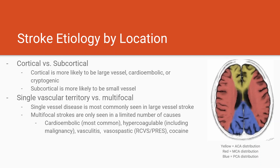Before moving on to hemorrhagic stroke, I want to reemphasize using the location of stroke to determine etiology. One way to differentiate stroke subtypes is whether they affect cortical or subcortical regions. The cortex is the distal gray matter, while the subcortex is the deep gray matter. Subcortical strokes are almost always small vessel in nature, whereas large vessel, cardioembolic, and cryptogenic strokes almost all affect the cortex — so location really helps narrow your differential.